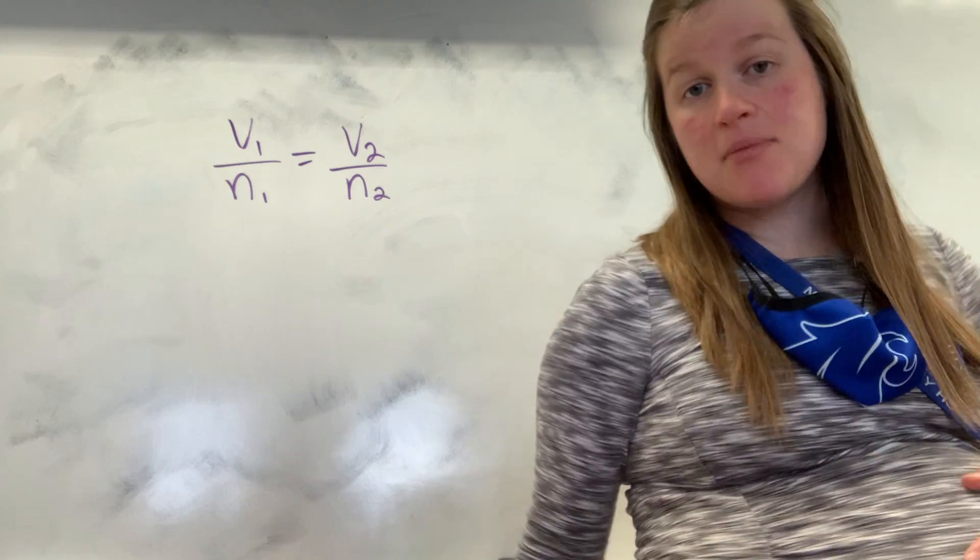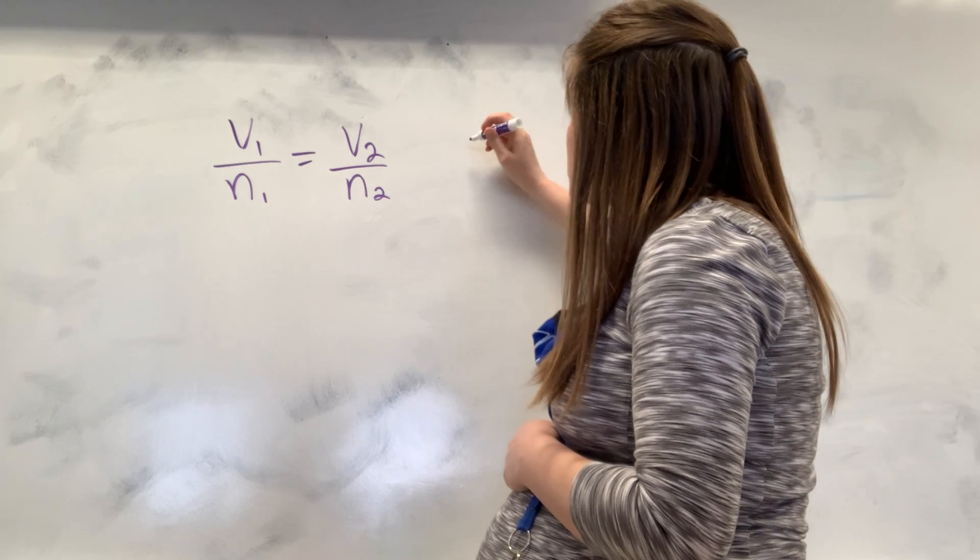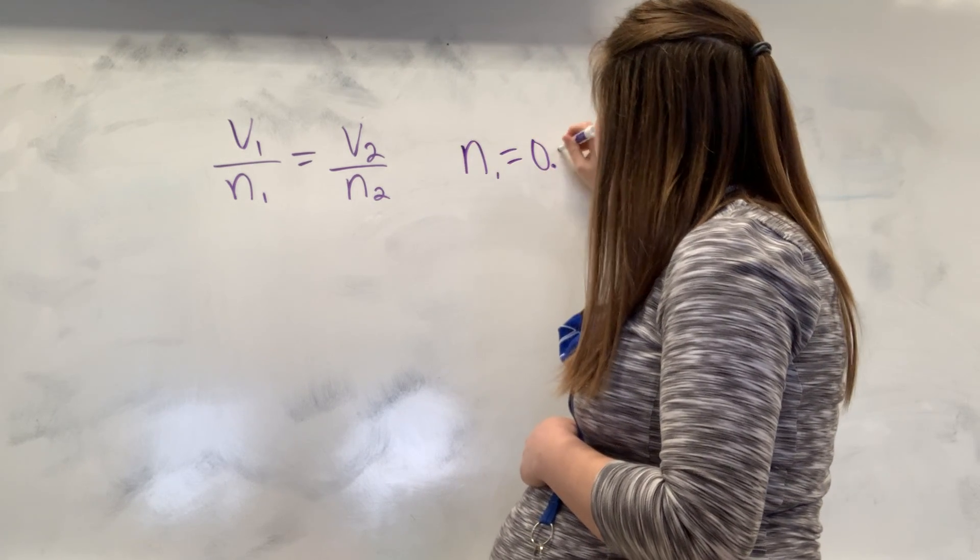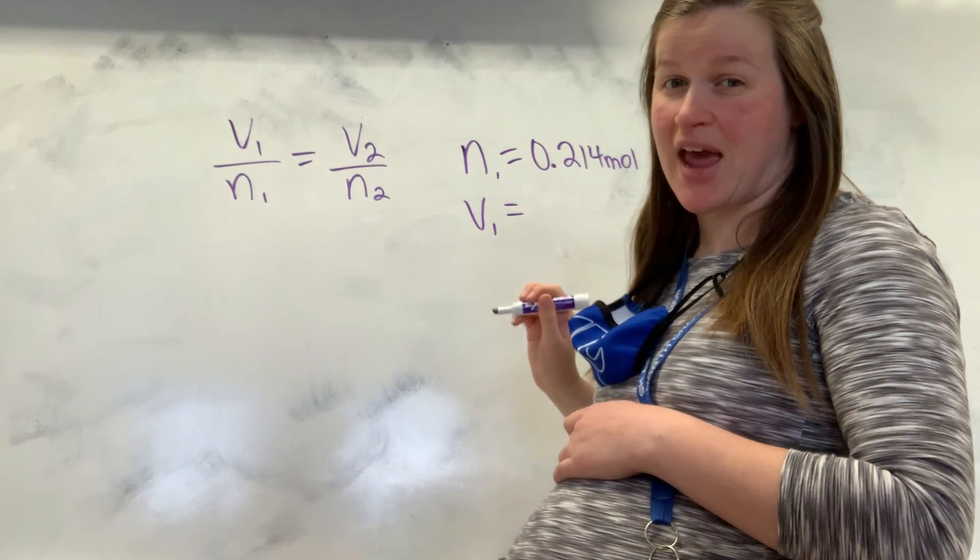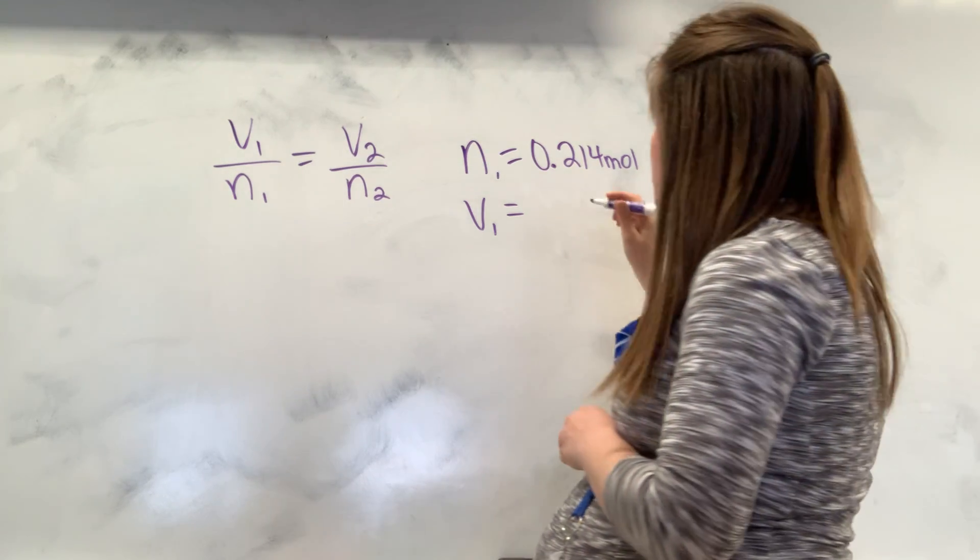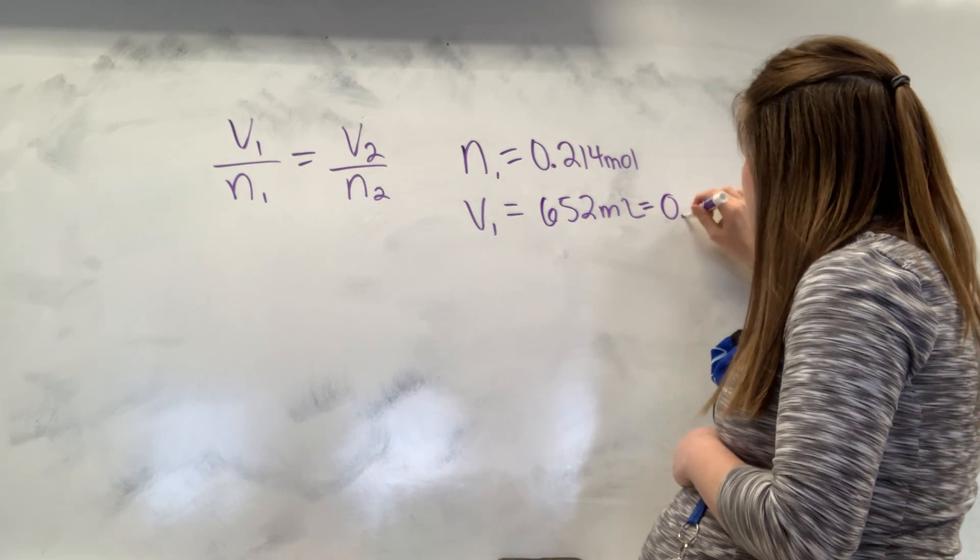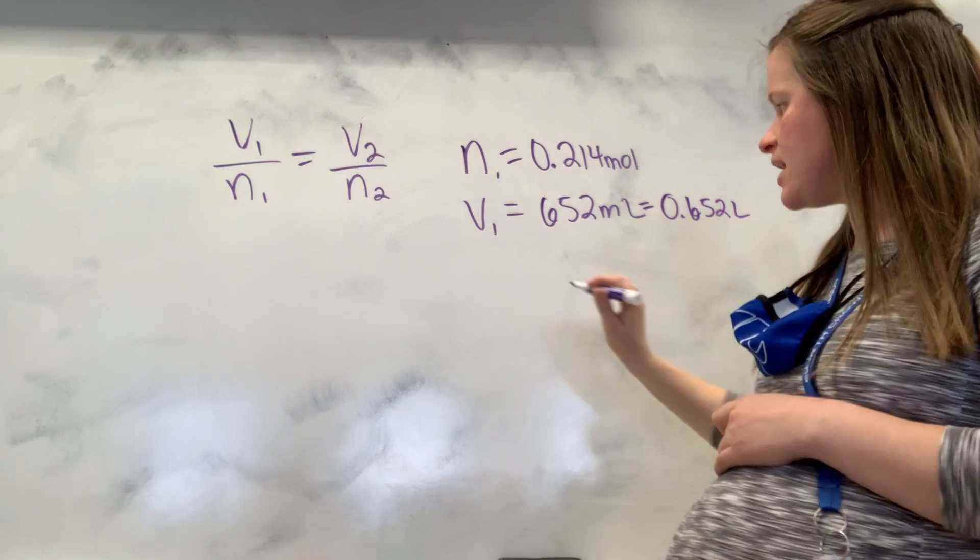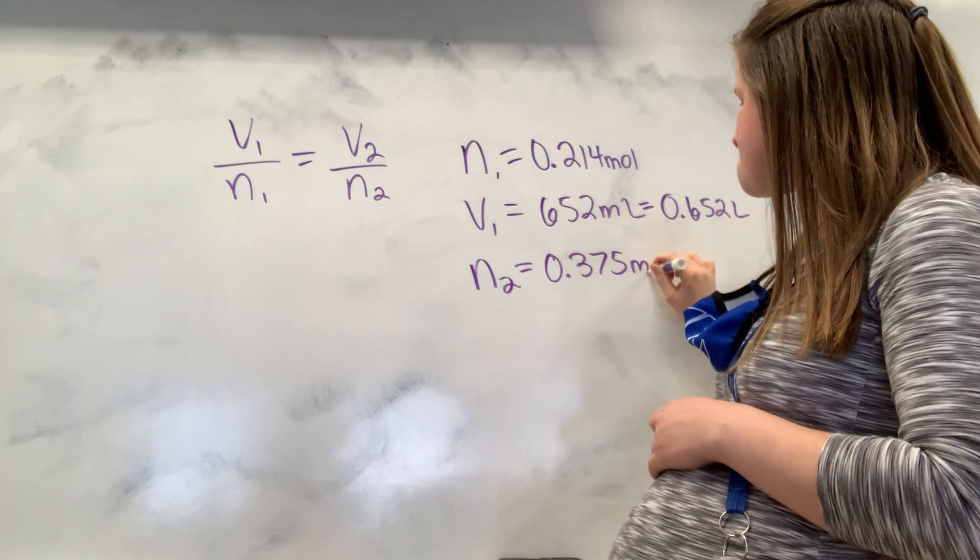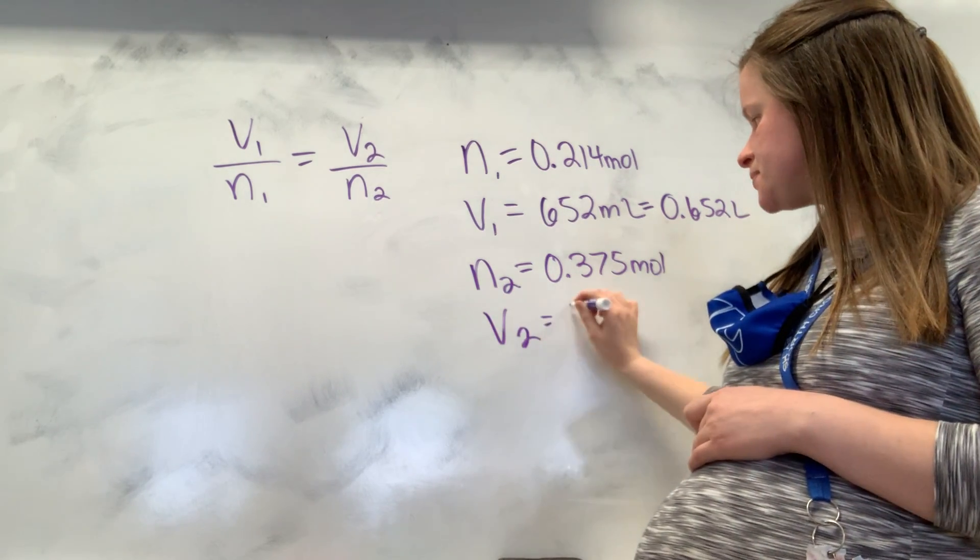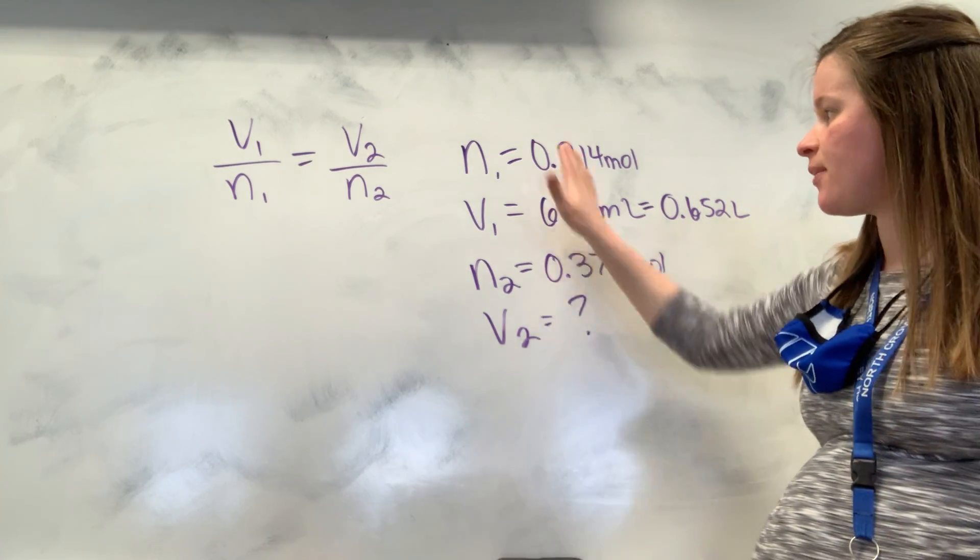So whenever you're looking at this problem, or any problem like this, we have to identify our variables. And so N stands for moles. So it tells us that we have 0.214 moles. And it tells us our volume. Remember, volume always has to be in liters for gas every time. And so we have 652 milliliters, which is equal to 0.652 liters. And then we have our N2. It tells us that we increase it to 0.375 moles. And we're looking for our new volume. So you should look at the example problem in your notes and make sure that you understand how I get all of this information.